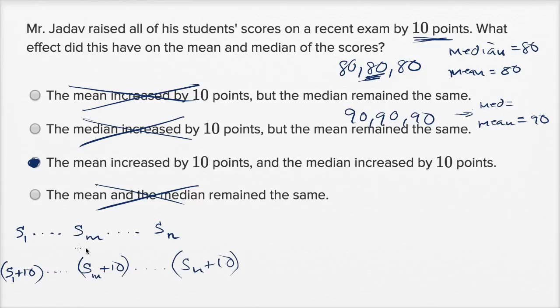So if all of the scores go up by 10, whatever was that median, that's still going to be in the middle, but now it's going to be 10 higher. So your new median is going to be 10 higher. So hopefully this justification shows you that for whatever combination of scores, if you order them in this way, and you need to order them to figure out the middle value, the median value, that the median indeed would go up by 10.